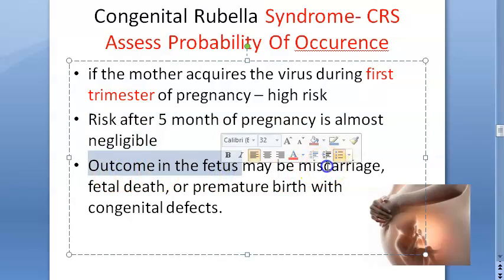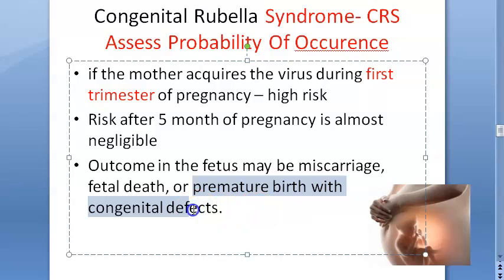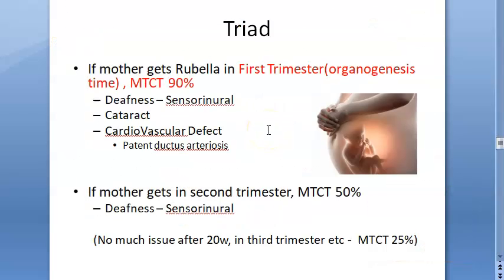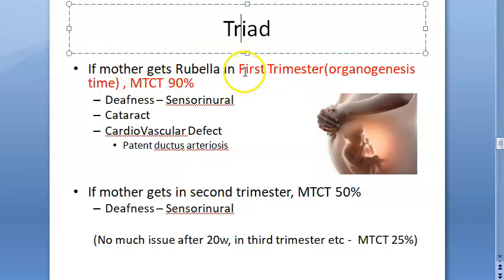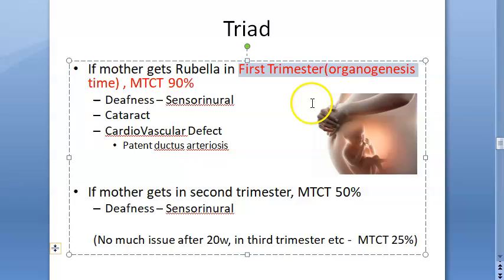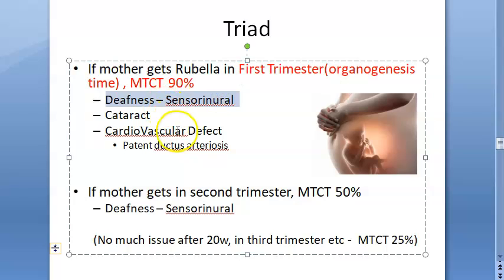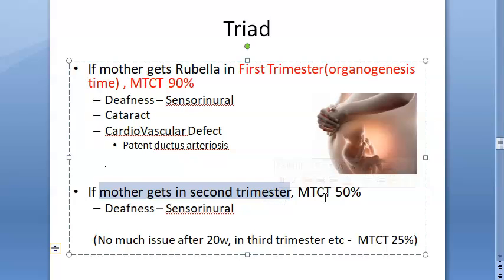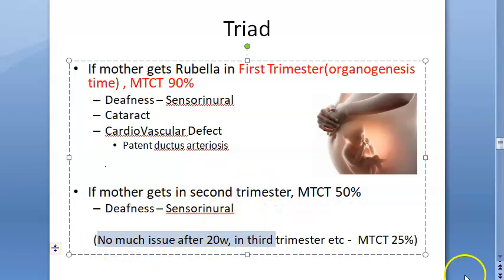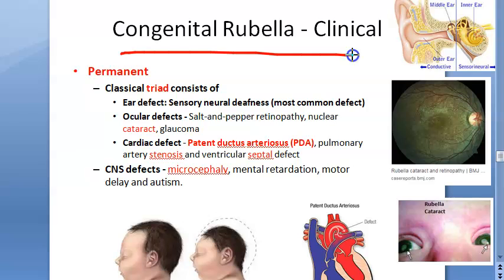The fetus can suffer miscarriage, fetal death, or premature birth with congenital defects — collectively called congenital rubella syndrome. During the first trimester, organogenesis is occurring and mother-to-child transmission is 90%, leading to deafness (sensorineural), cataract, and cardiovascular defects like patent ductus arteriosus — the classic triad. In the second trimester, transmission is 50% (mainly sensorineural deafness), and after 20 weeks, risk drops to 25%.